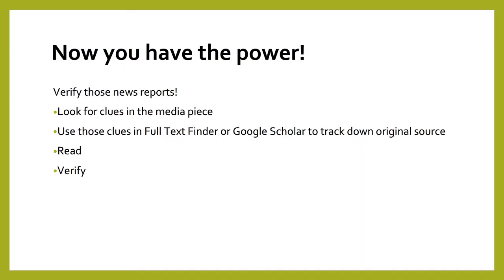Okay, so now with knowing the two main ways to track down sources, you have the power to do so, and you have the power to verify those news reports that contain statistical elements. Remember to look for clues in the media piece. Use those clues to search Full Text Finder or Google Scholar to track down the original source. Then read it and verify. I hope this helps with completing the coursework for this portion of the class. If you have any questions at all, please let your professor know and we can go forward from there. Thank you.